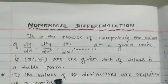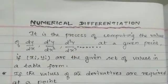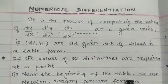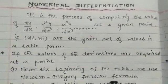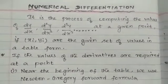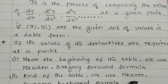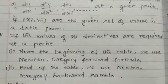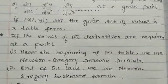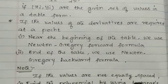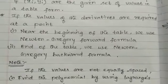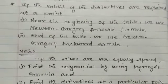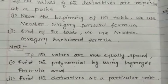If the values of the derivatives are required at a point near the beginning of the table, we use Newton-Gregory forward formula. At the end of the table, we use Newton-Gregory backward formula. If the values are not equally spaced, then we can find the polynomial using Lagrange's formula and find the derivatives at a particular point.